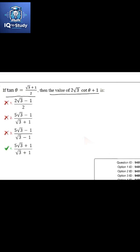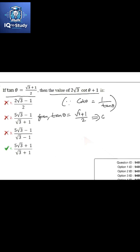We know that cot θ is equal to 1 by tan θ. Here tan θ is given as (√3 + 1) by 2, which implies cot θ is equal to 2 by (√3 + 1).